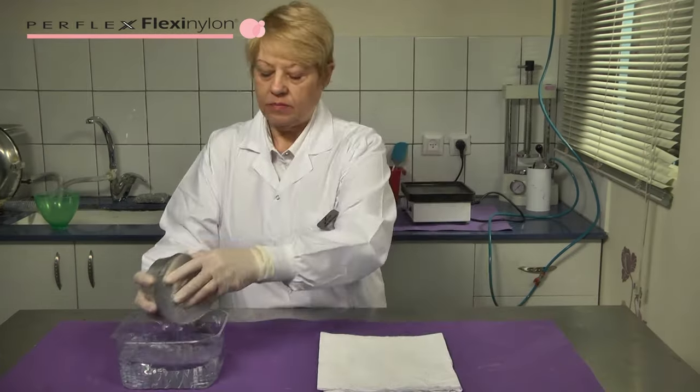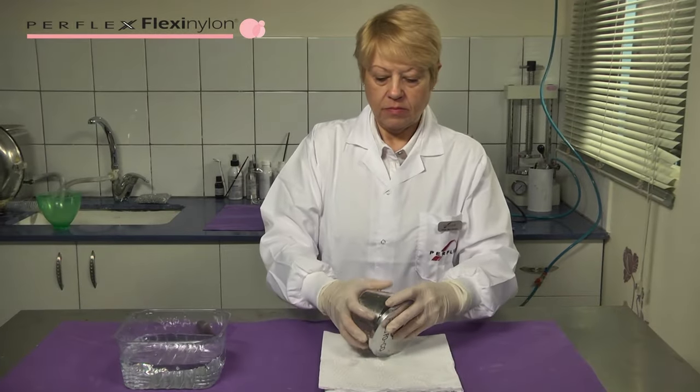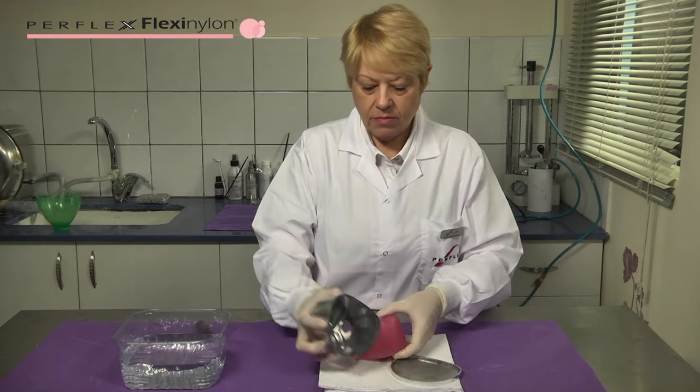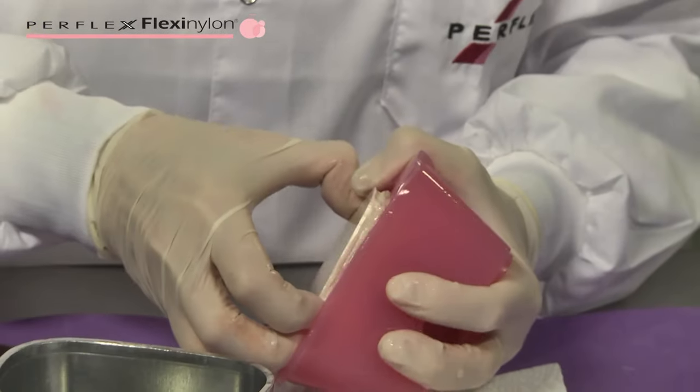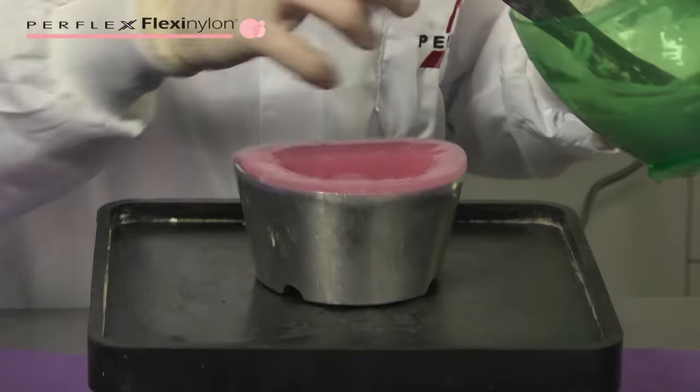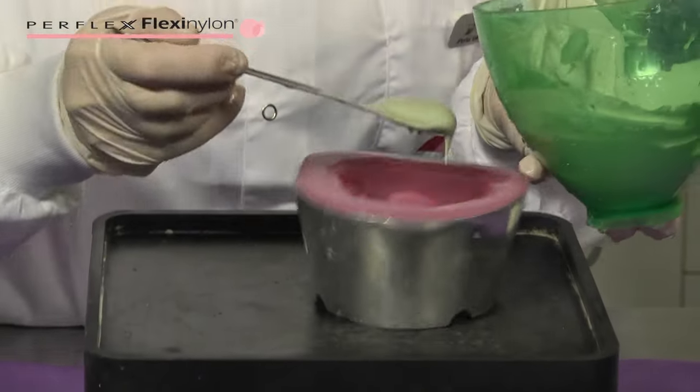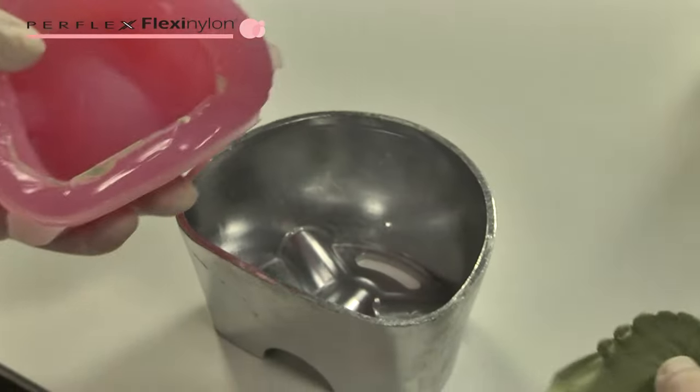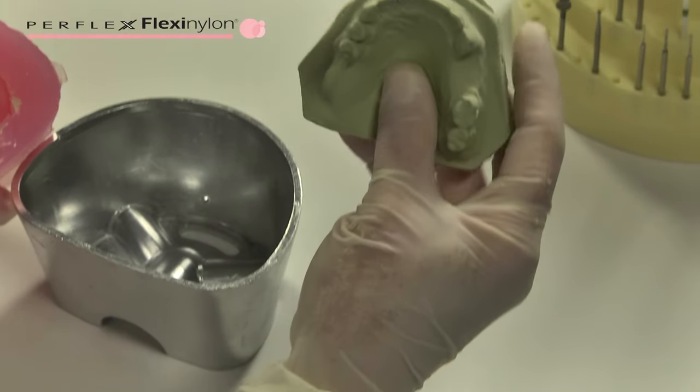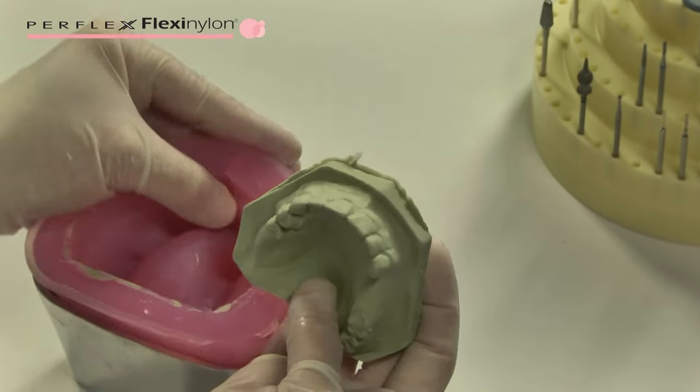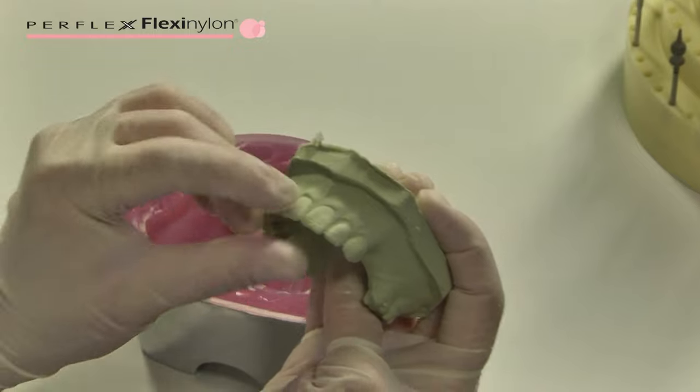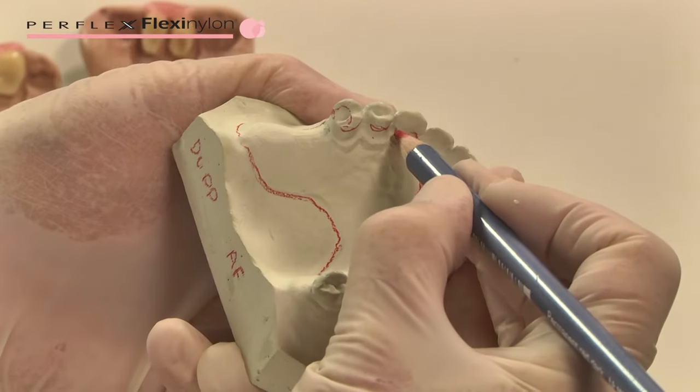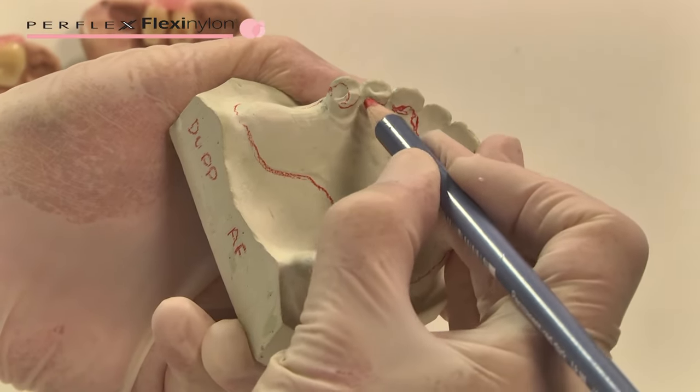After the gel has cooled and set completely, remove the master model carefully, making sure no wax or other deposits remain that may affect the duplicate. Pour in a well-mixed type 3 stone and allow it to set completely. Remove the duplicate stone model, trim, and examine carefully for distortions and discrepancies with the master model. If the duplicate is perfect, dry the model. Retrace the design line again with the red pencil, watercolor red pencil.